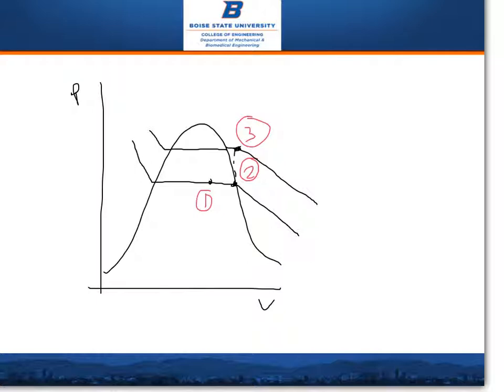Afterwards, the specific volume increases, so that's where state 2 is, right at the saturated vapor line. Then from there, the pressure increases to 600 kPa. So it goes up to here and becomes a superheated vapor because of the increase in pressure.